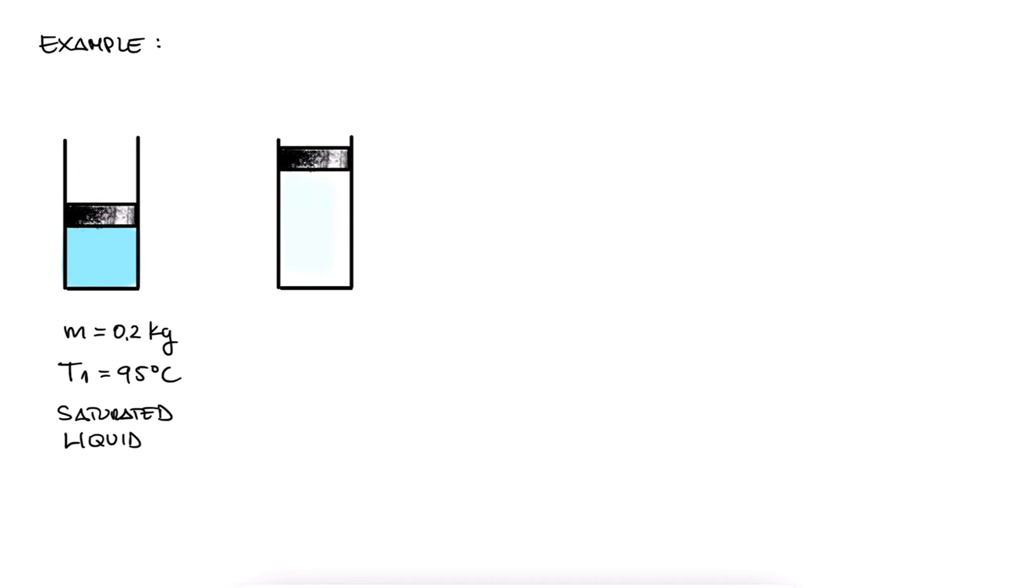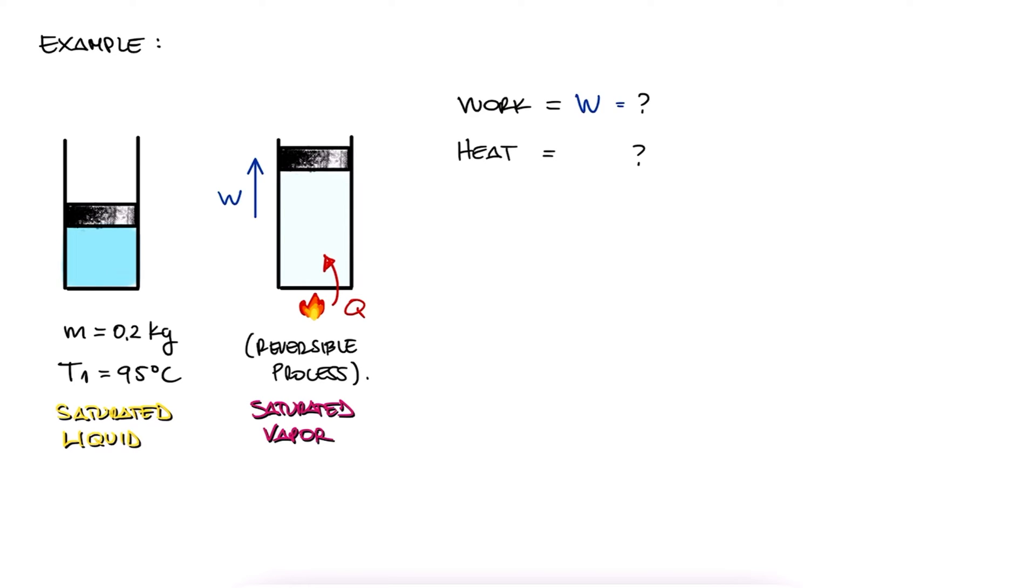A piston cylinder contains 0.2 kilograms of saturated liquid water at 95 degrees Celsius. It is now boiled to become saturated vapor in a reversible process. What is the work and the heat transfer using the energy equation, and what is the heat transfer using the entropy definition? Are they the same? As usual, try to answer these questions yourself before watching this solution.